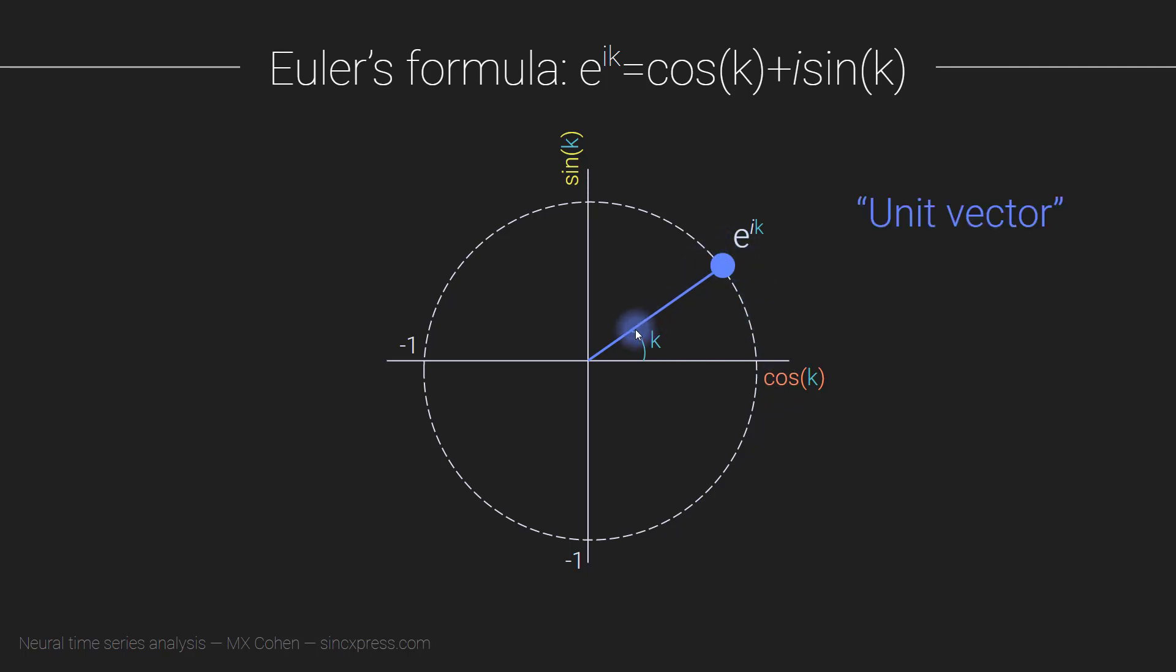Right, so this is called a unit vector. And unit here refers to the length of one. So this is a vector that has a length of one.